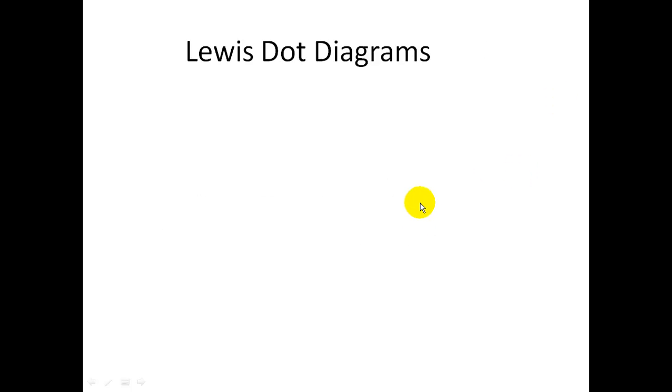Another thing that you need to be able to do is make Lewis dot diagrams. These are dots, and the dots that you're going to use represent the valence electrons. How many are in that outer shell? Remember, valence electrons are the electrons in the outer level.